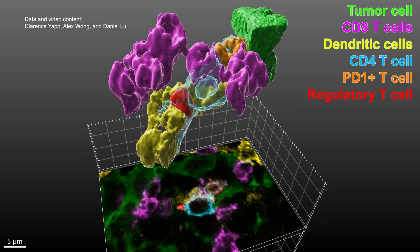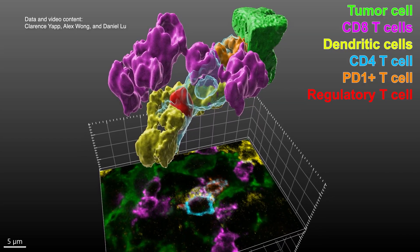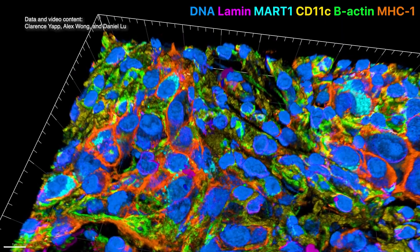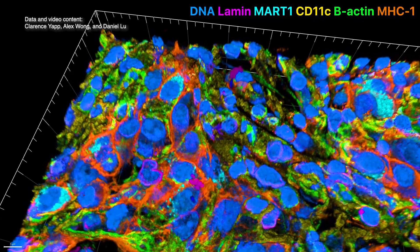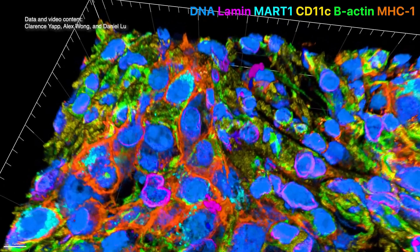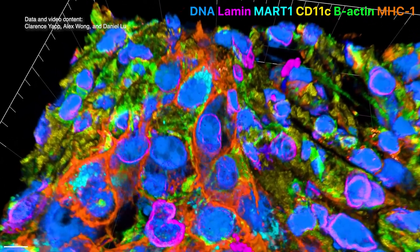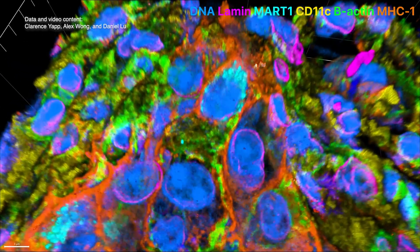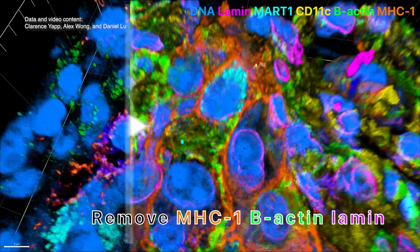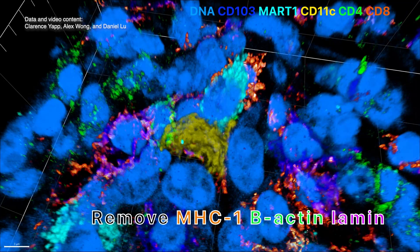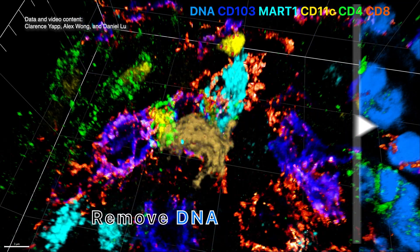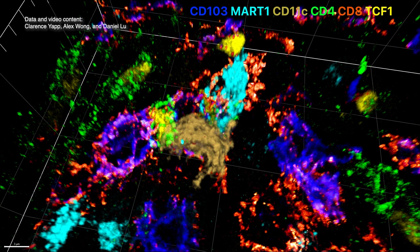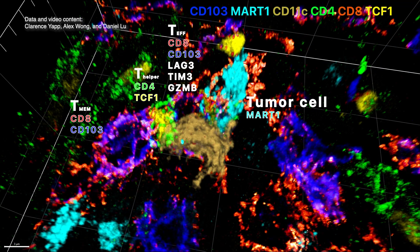Now the team can use SI-CIF to create 3D images of thicker tissue samples, which adds features like the shape of immune cells, tumor cells, and blood vessels. Scientists can then delve into the details of what the various cell types in a tissue sample are doing.